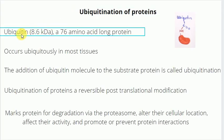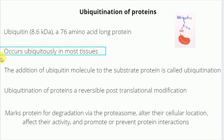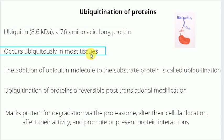The ubiquitin is a 76 amino acid long, 8.6 kilodalton polypeptide, and this protein actually occurs ubiquitously in most tissues in most of the eukaryotic organisms.